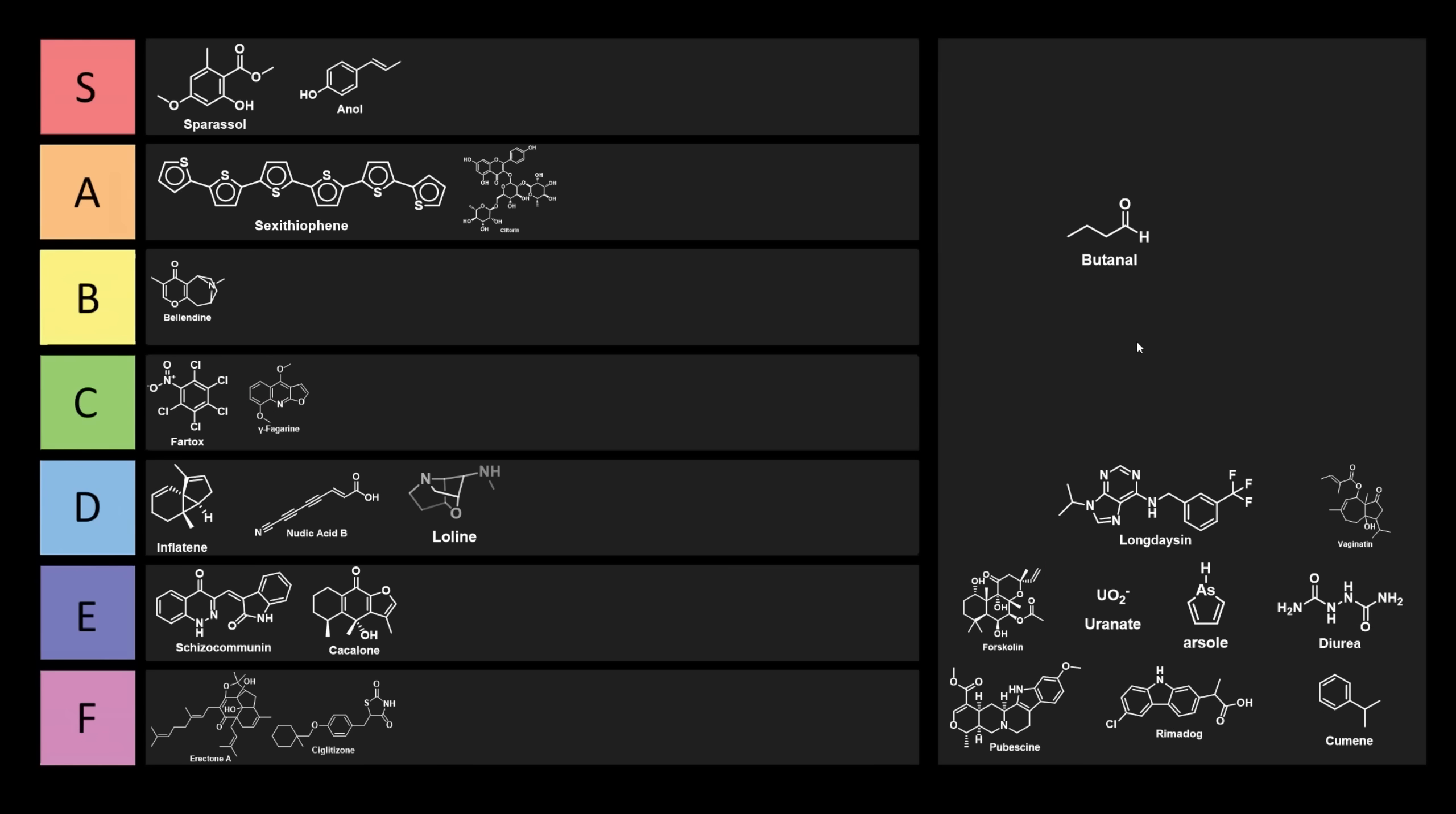Here we have a classic, butanil, also known as butyraldehyde. This is probably one of the first chemistry jokes most organic chemistry students come across, for its resemblance to a couple words that are very familiar. Coincidentally enough, Wikipedia says that it has an unpleasant smell, which might not be a surprise to you based on its name. I think butanil has to be an S tier. Easy S tier. Very unfortunate.